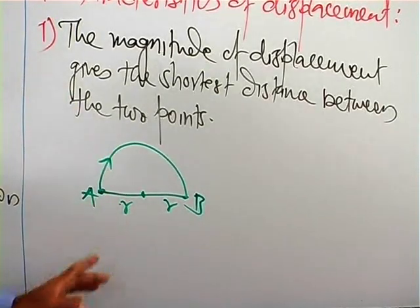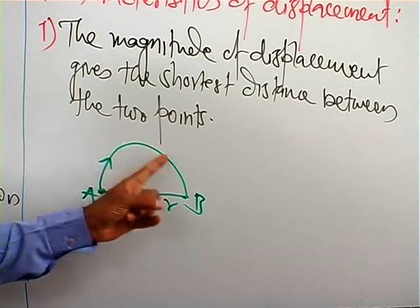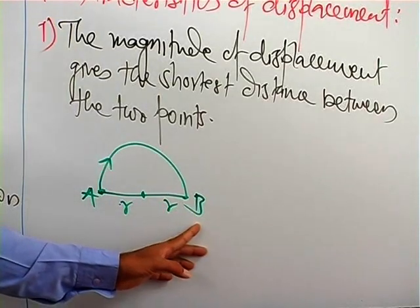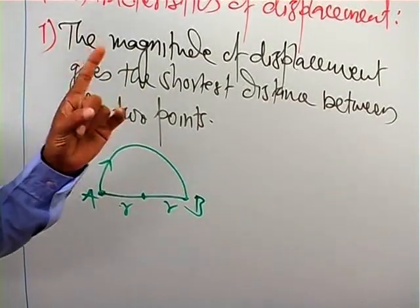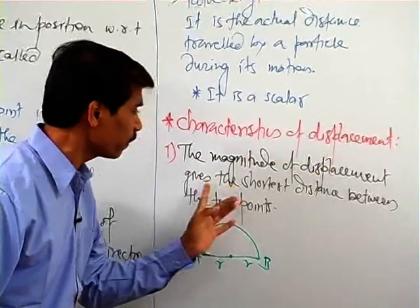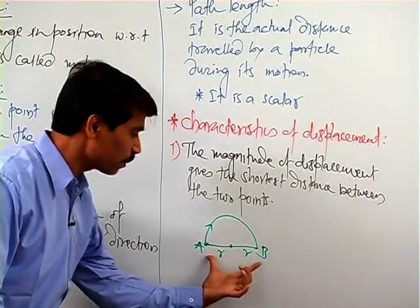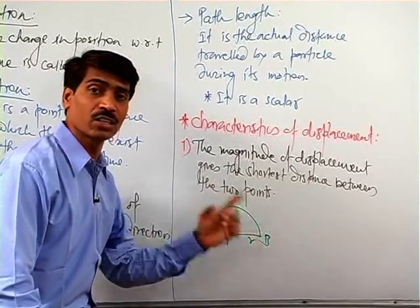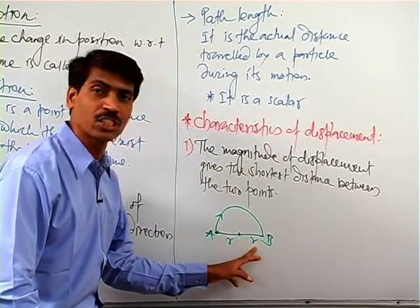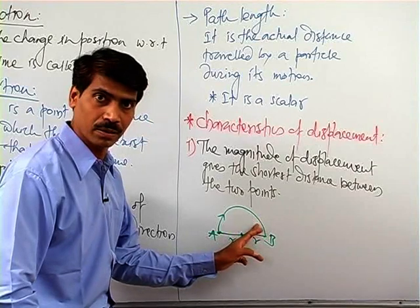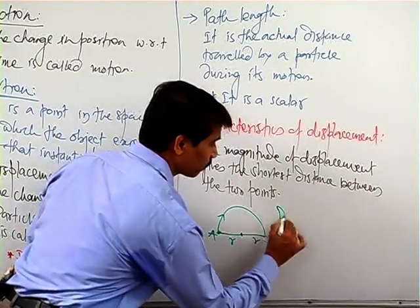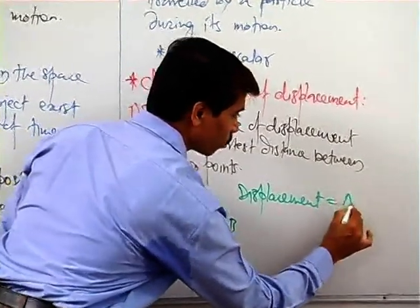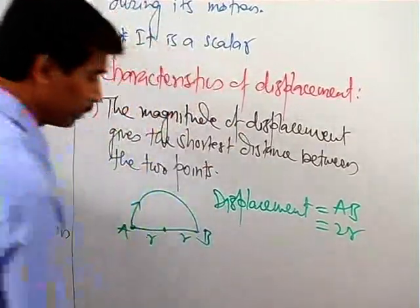In this case, what is the displacement? The particle moves along the circumference of a circle and reaches point B - initial position is A, final position is B. Displacement gives the shortest distance between A and B. The shortest distance between A and B is R plus R, that is 2R, and not the arc distance. So displacement in this case is equal to AB, which is equal to 2R.